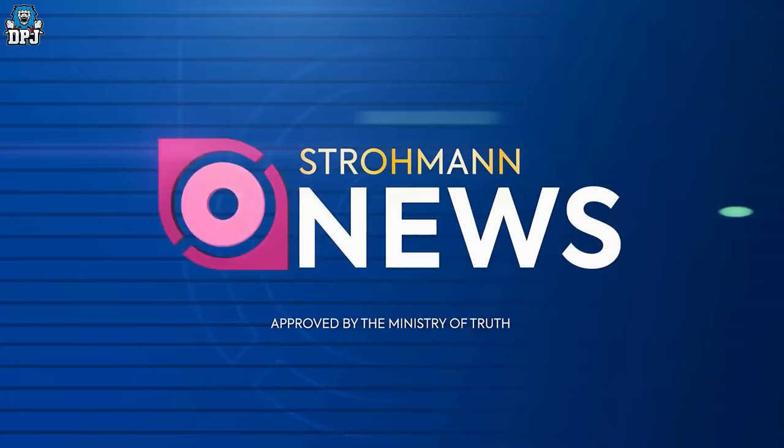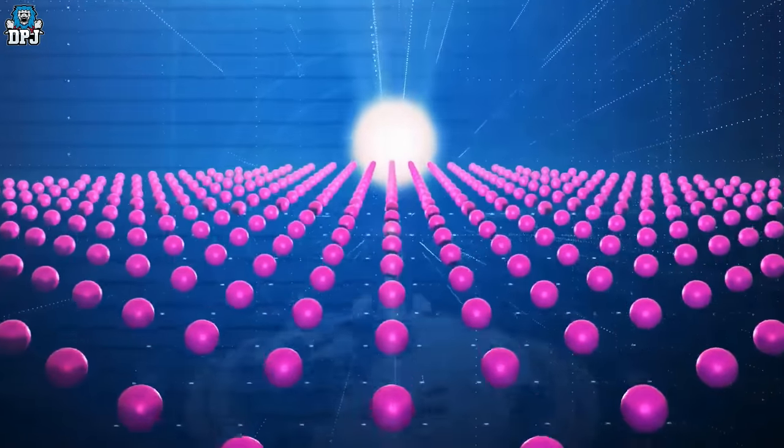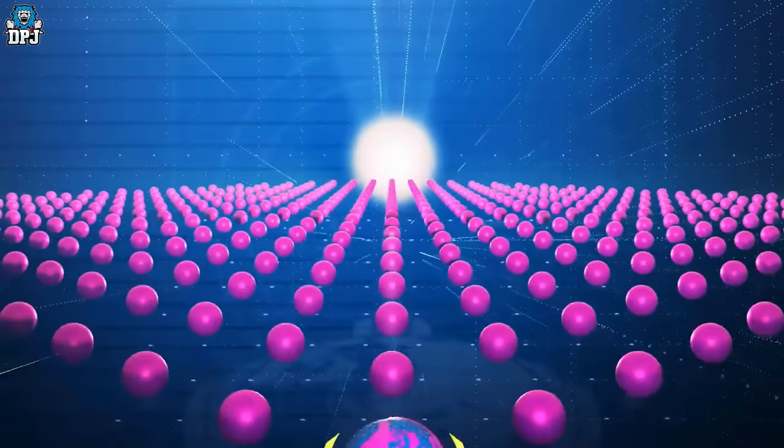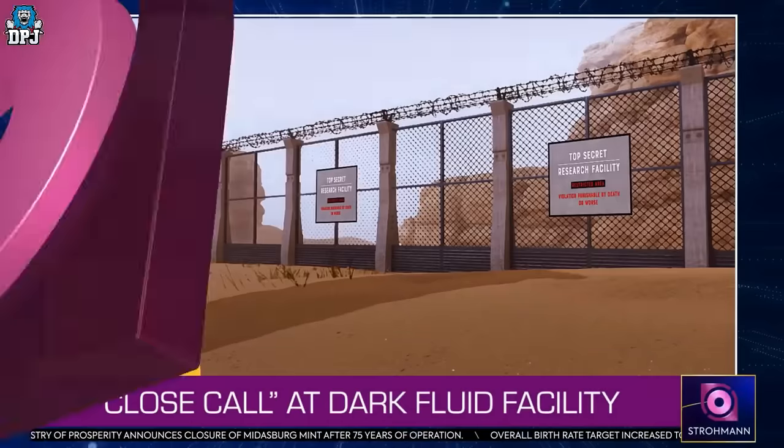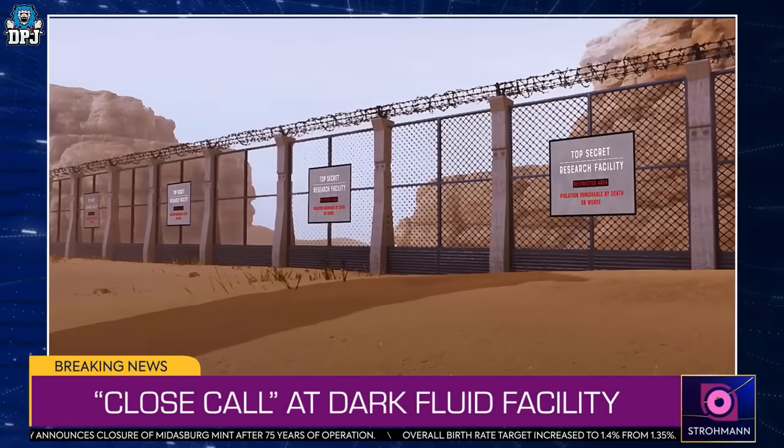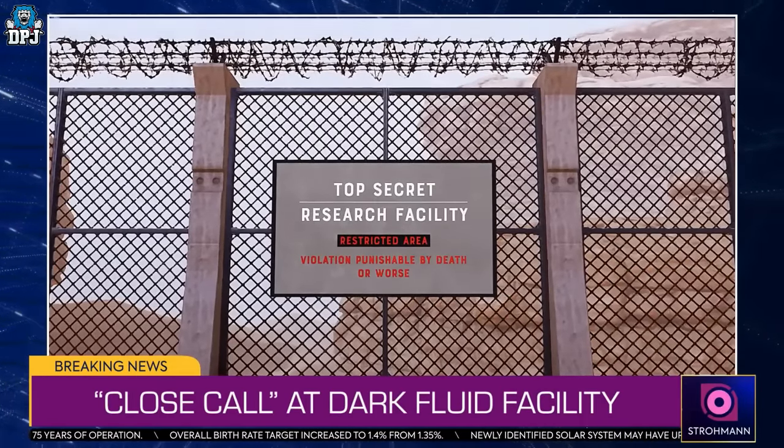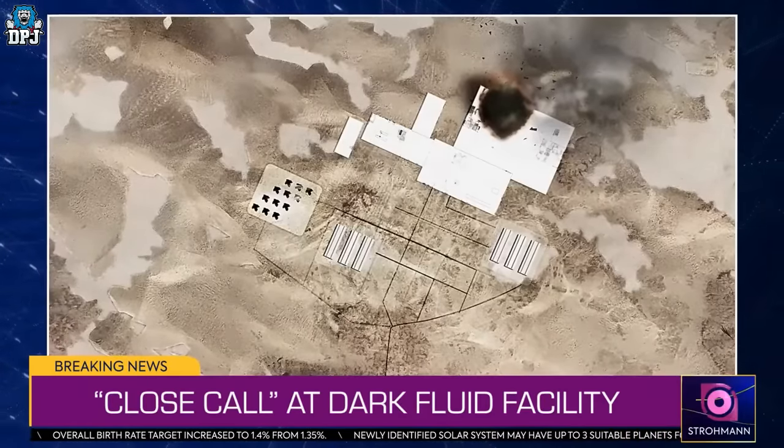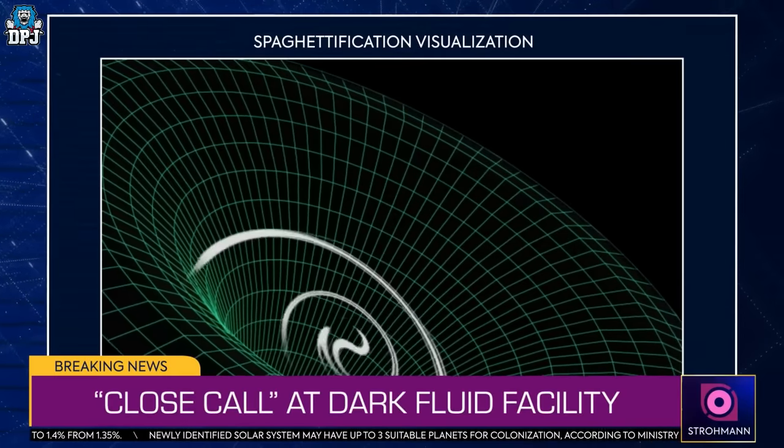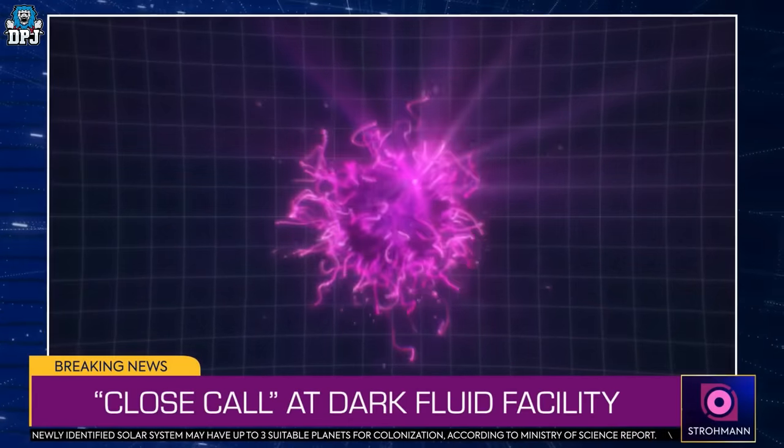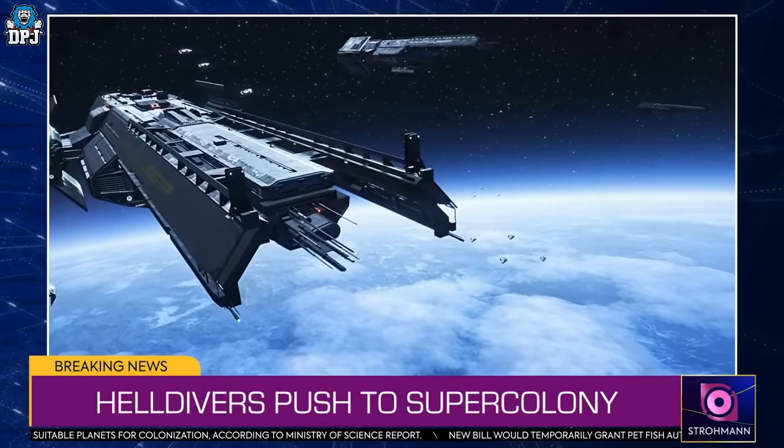The third video showcases a close call at a dark fluid facility where this exotic material basically collapsed into a small black hole and killed 12 facility members. Check out the video: 'I'm your host Coretta Kelly. Today the dark fluid research facility on Moradesh went into emergency shutdown following what officials are describing as quote a close call. According to reports, the volatile exotic materials suddenly collapsed into a micro black hole that spaghettified 12 facility members before evaporating. Production of weaponized dark fluid is scheduled to resume tomorrow with no shortfalls projected in support of the ongoing operation to destroy the Terminid super colony. That's Liberty's Latest, I'm Coretta Kelly.'